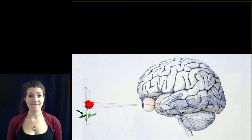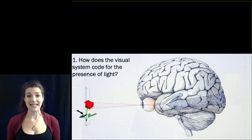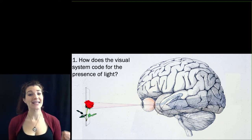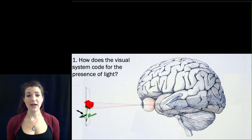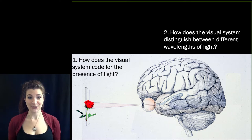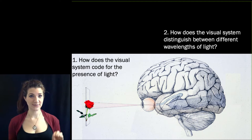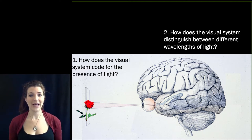This is going to come in two parts. First, we need a way for the system to know whether or not there is light present — a code that the brain can interpret as light. And we need a way of discriminating between different wavelengths of light to get us closer to perceiving color. To begin to answer the first question — how does the visual system code for light — we need a quick overview of what we mean by coding.